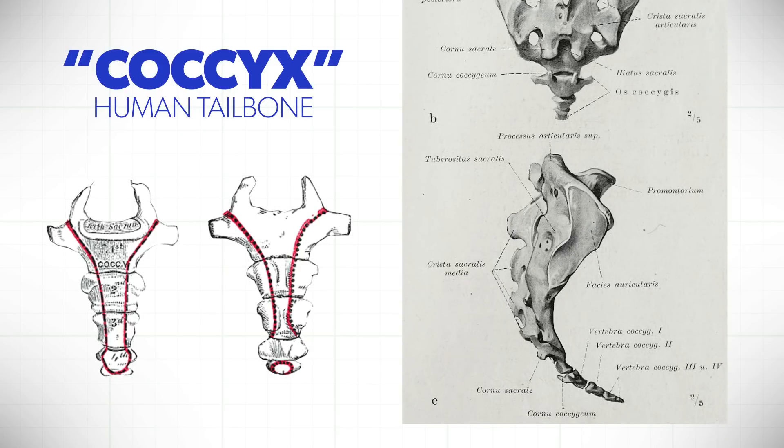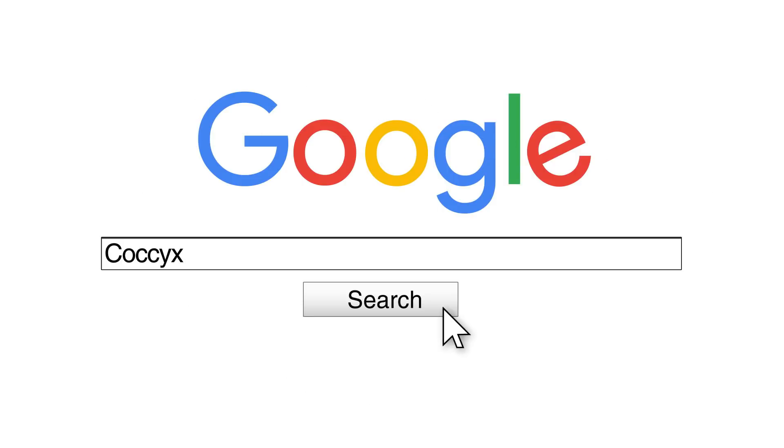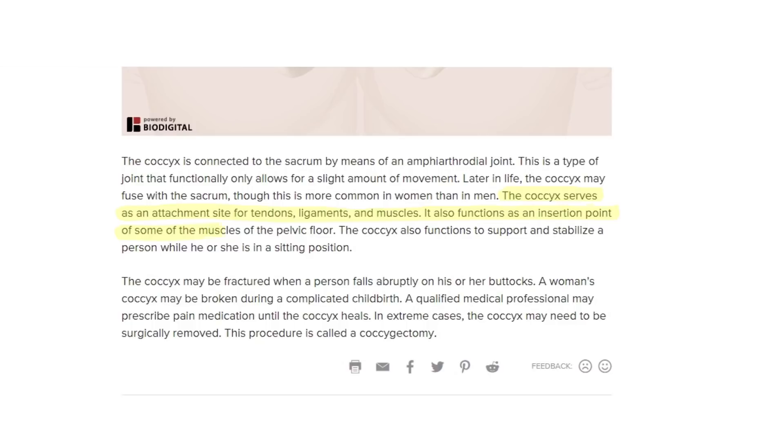Type in the word coccyx in Google and from Healthline: The coccyx serves as an attachment site for tendons, ligaments, and muscles. It also functions as an insertion point of some of the muscles of the pelvic floor. The coccyx also functions to support and stabilize a person while he or she is in a sitting position.